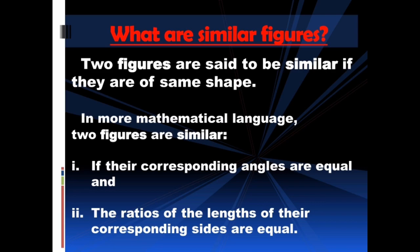First of all, we need to know what are similar figures. In general, two figures are said to be similar if they are of the same shape. However, in more mathematical language, two figures are similar if their corresponding angles are equal and the ratios of the lengths of their corresponding sides are equal. That means two figures can be considered as similar figures if they satisfy these two conditions: first, both figures should have the same corresponding angles; and second, both figures should have the same ratios of the lengths of their corresponding sides.